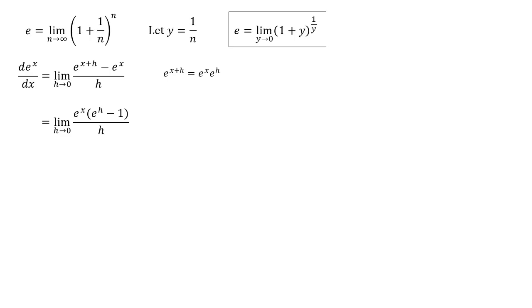Now that e to the x there is not dependent upon h, so we can take that outside of the limit. So we have e to the x times by the limit of e to the h minus 1 all over h. Our problem now is finding this limit because both top and bottom of that fraction are tending towards 0. So we need to do a bit of rearranging to get this into a form where we can find the limit.